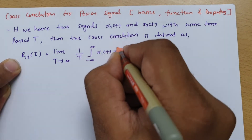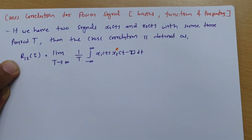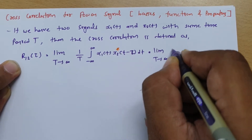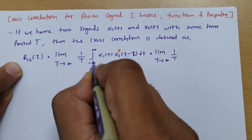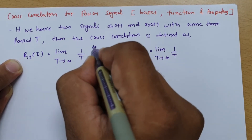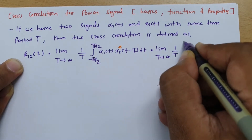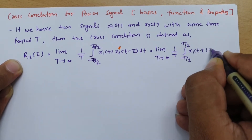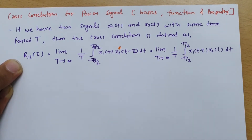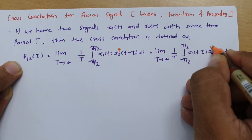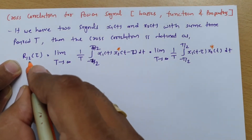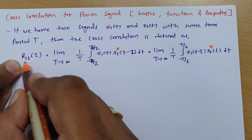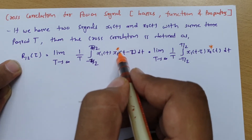where here we are correlating the first signal with the second signal, so we need to provide the conjugate to x2. A similar calculation can be done using the limit as T tends to infinity, 1/T, integration from minus T/2 to T/2, with x2(t), shifting x1(t minus τ), and dt. Here we should also place the conjugate on x2, as we are calculating r12, which means correlation of the first signal with the second signal.